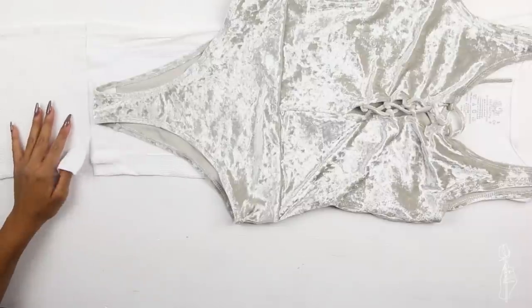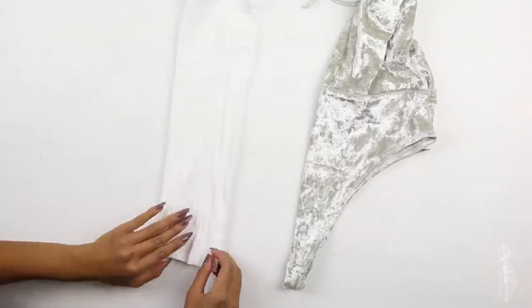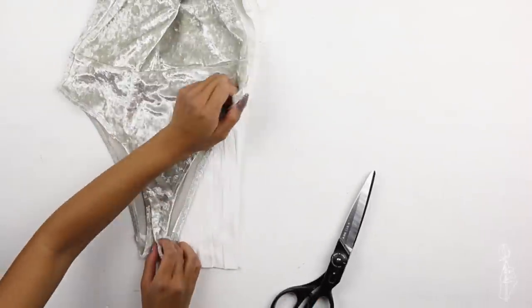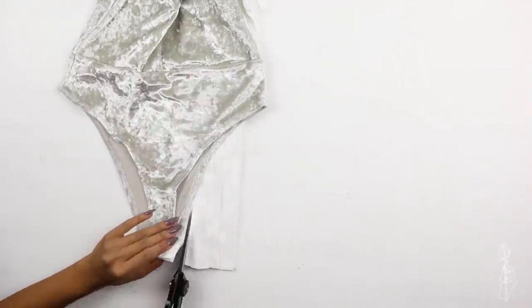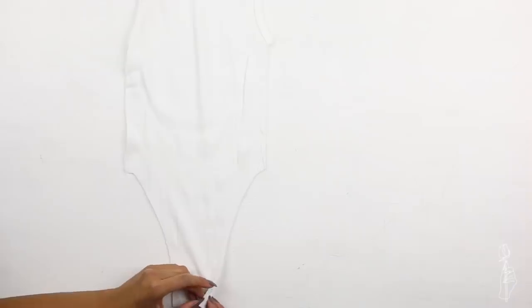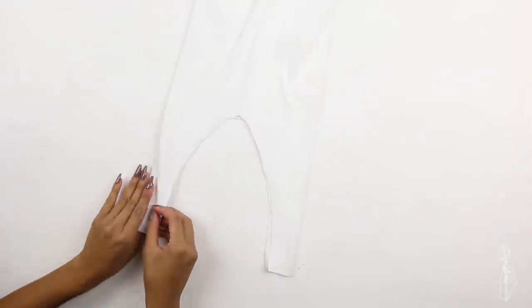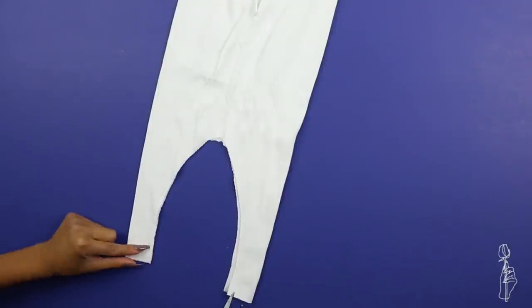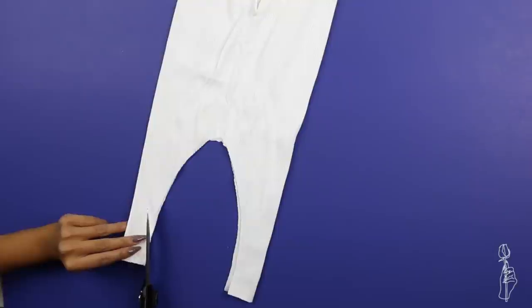Then you want to take your tank top, fold that in half. And what I did was fold my bodysuit in half as well. That way I could find the half of that, and then I place that on top of my tank top and I just cut around where the leg hole was. Then you want to take the tank top, fold it in half again, but fold it in half the other way so that if this tank had side seams, those would match up. And then you just want to cut a deeper scoop for the front part of the leg opening.